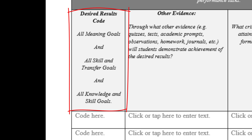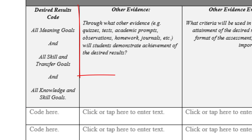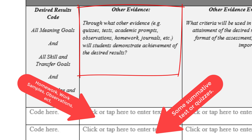Over on the left, we have our desired results code. We're going to take those codes from our skill and transfer goals and put them here to see where they match up with our particular formative assessments. This is to make sure that we're guiding our lesson along with the knowledge and skills we've decided students need to acquire. In our other evidence section, we'll select the other assignments we plan on having students complete throughout the lesson. Most of these will be formative assessments, but one or two might be used as summative assessments such as tests or quizzes, where we might ask students to perform more complicated tasks in the form of short or extended response or solving large form problems.